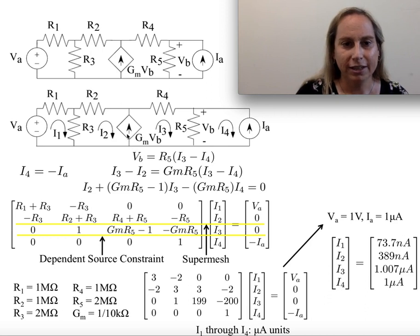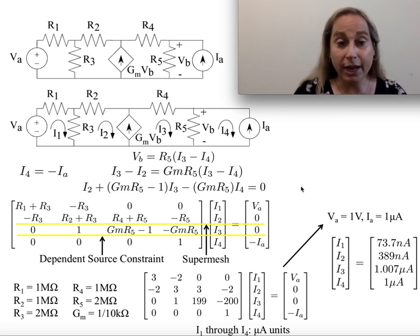So I can take Vb, substitute that in for Vb here, and then relay the I2 and I3. And all of a sudden, I get this is my relationship. So now I've actually got four equations. I've already got two of them. So I'm in really good shape here.